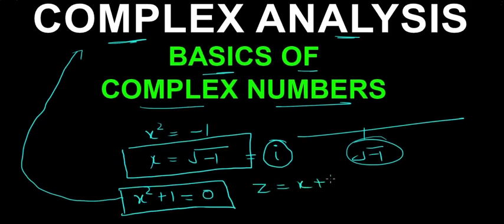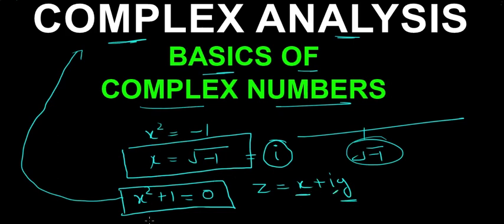So z equals x plus iota y, and in every complex number we can identify the real part and imaginary part. The part containing iota is the imaginary part because iota is imaginary — there is no iota on the real line.